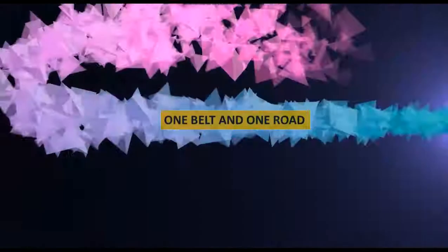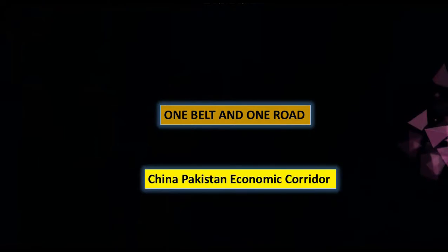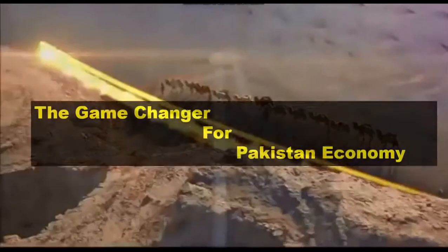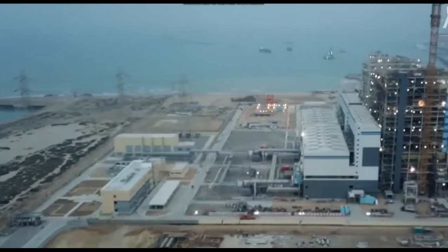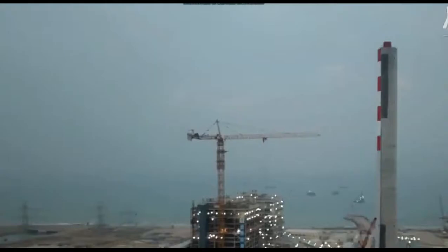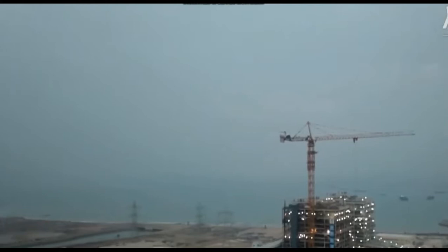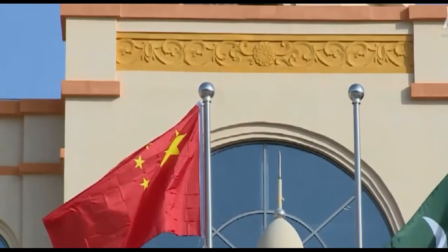One Belt One Road is a dream project of China. This route connects China to Western countries through Pakistan. It is a difficult task for China to complete this dream project. In this route, Uzbekistan, Ukraine, Greece and other small states exist, each with their own geographic, political and social terms and conditions which are difficult for China to tackle. That's why China has focused more on CPEC.